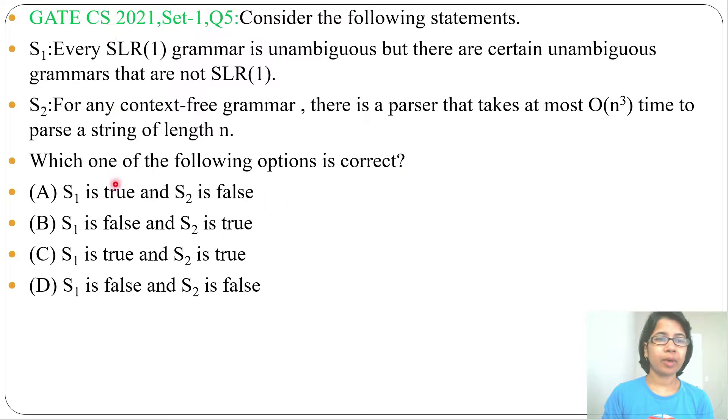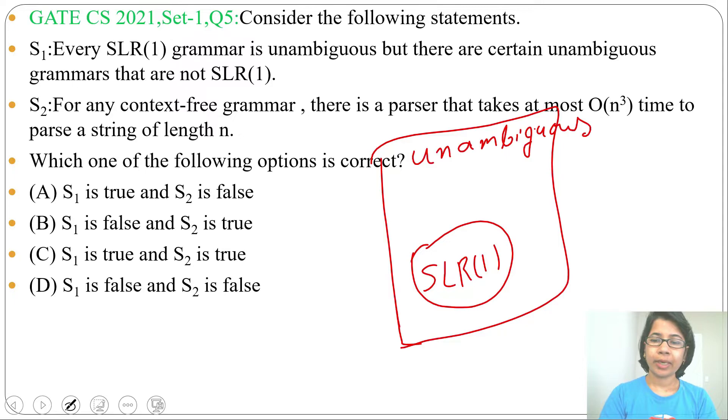Let's go one by one. Statement 1: Every SLR(1) grammar is unambiguous, but there are certain unambiguous grammars that are not SLR(1). This is true. SLR(1) is a subset of unambiguous grammars, so every SLR(1) is unambiguous.